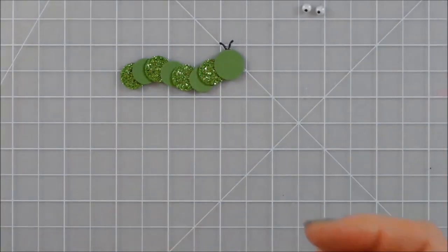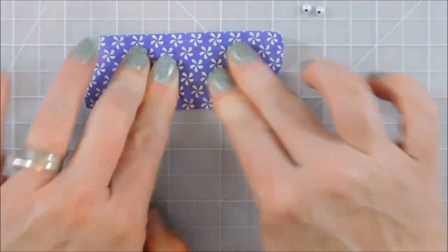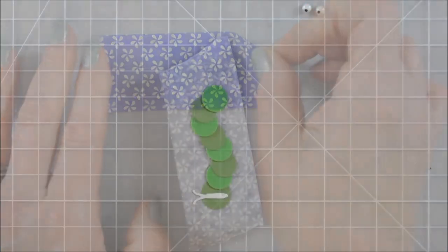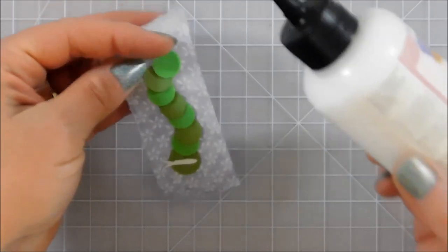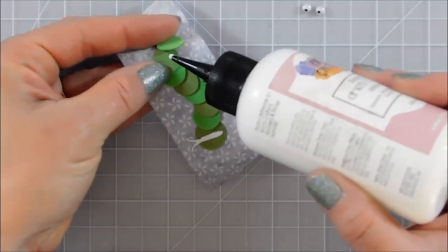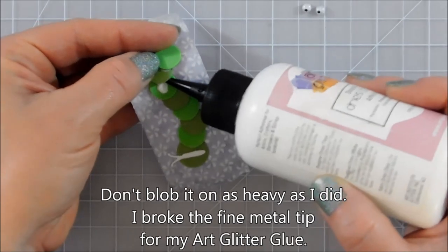So once I've got that where I want it I'm going to take some purple tape and this is really low tack and it won't damage the front of my caterpillar at all. And now I can get my art glitter glue up underneath each one and fold it back where it goes.